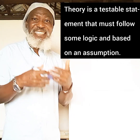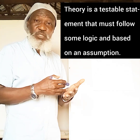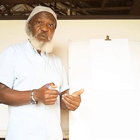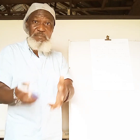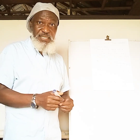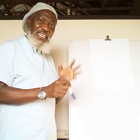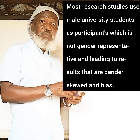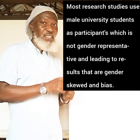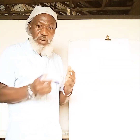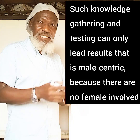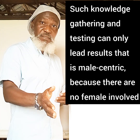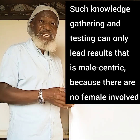A theory is a testable statement; it has to follow some logic based on an assumption — the assumption being that women are less or more populated than men. Then we test it. Over the years we have observed that in academia, most studies are biased: they use male university students as participants for research. Not much is taken from women in the other forms of knowledge gathering, and so that knowledge is male-centric.